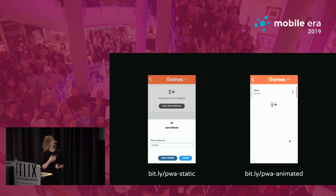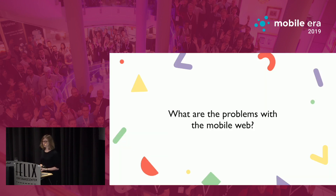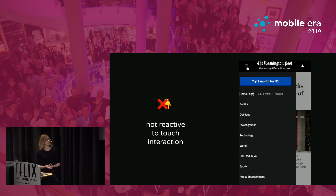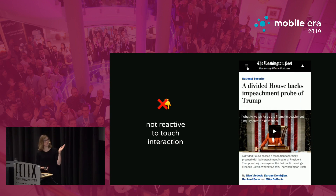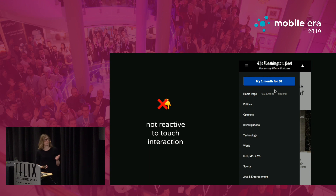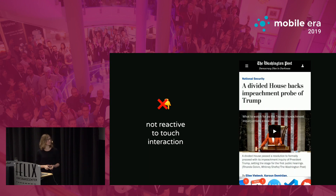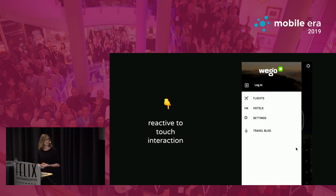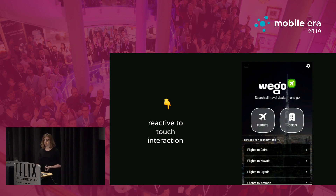First I want to talk about the problems with the mobile web — what the problems are in interaction and animation when we look at mobile websites. One is missing touch interaction. Often applications aren't reactive to touch. In this example we have a menu that slides in from the left, and the natural thing would be to slide it away with a slide gesture, but on a lot of mobile websites we're still missing that. A better example is the WeGo PWA, which uses the AppShell model that gives you slide gestures to remove the menu again in a natural way.